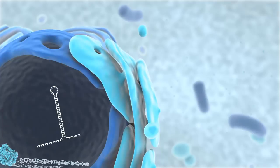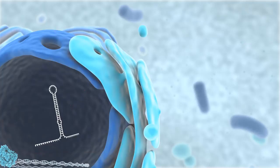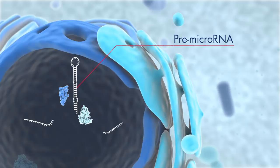Biogenesis of microRNA begins in the nucleus. MicroRNA may be expressed in the same manner as any other gene and is often hundreds of bases in length. Before the primary microRNA transcript leaves the nucleus, it must undergo processing. First, Drosha removes the tails of the primary microRNA, leaving a shorter stem-loop structure referred to as pre-microRNA.